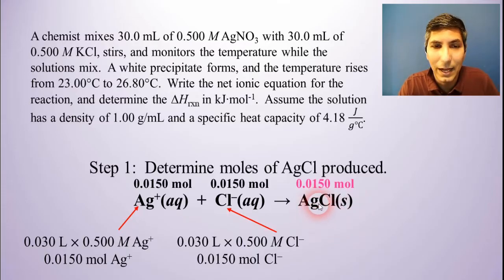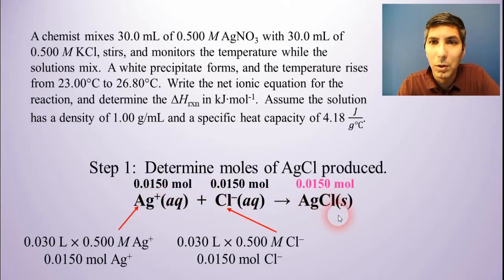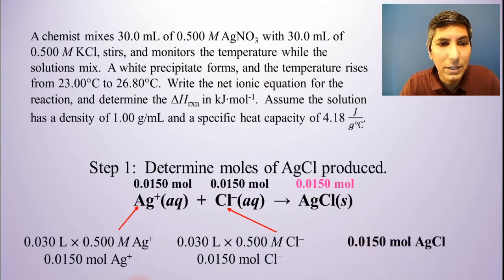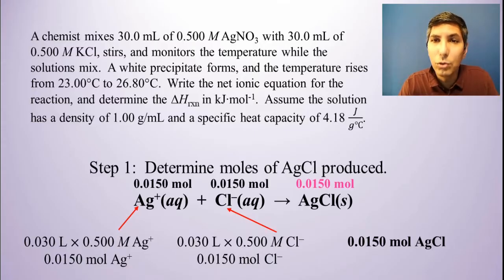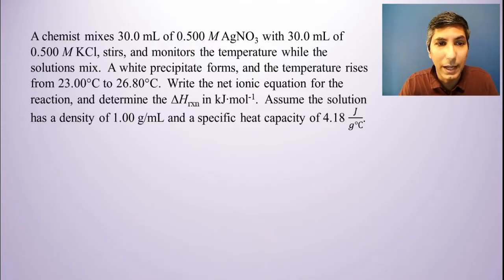So that means that we're going to have 0.0150 moles of silver chloride produced. It's not twice that. It's not adding them together. It's just 1 to 1 to 1. The mole values will be the same. So we're going to be making 0.0150 moles of silver chloride. So that's the moles part of this. Now let's do the joules or the kilojoules part of this next.